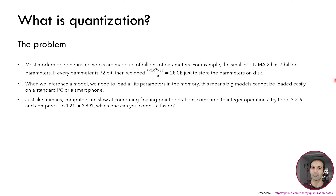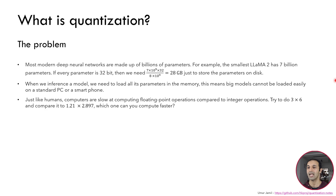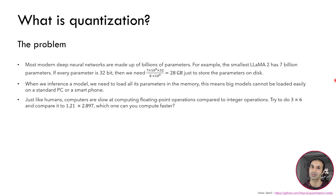Also when we inference the model we need to load all the parameters of the model in the memory. If we are using the CPU for inference then we need to load it in the RAM, but if you are using the GPU we need to load it in the memory of the GPU. Of course big models cannot easily be loaded inside the CPU RAM or the GPU in case we are using a standard PC or small device like a smartphone. And just like humans, computers are slow at computing floating point operations compared to integer operations. For example, if you try to do mentally 3 multiplied by 6, and also mentally 1.21 multiplied by 2.897, of course you are able to do much faster the 3 by 6 multiplication, and the same goes with computers.